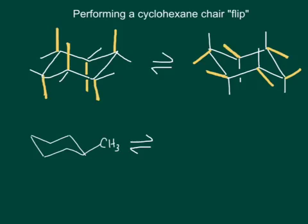Cyclohexane exists in a chair conformation, but it turns out that there are two chair conformations that exist for every cyclohexane ring. Shown here is one example of a cyclohexane. Notice that I've highlighted all of the axial positions with yellow bonds, and the equatorial are white.